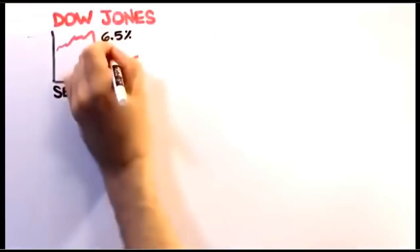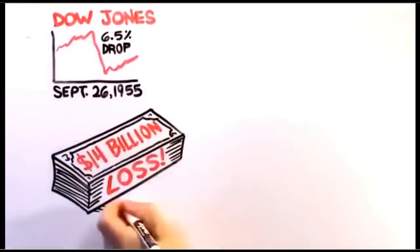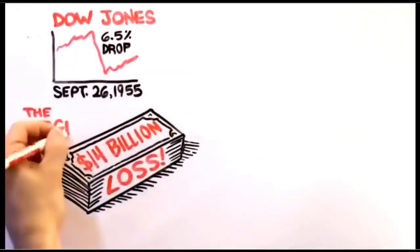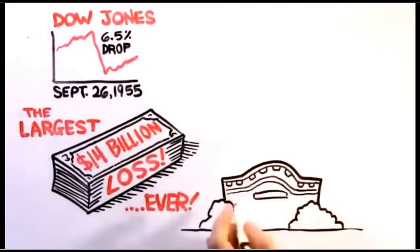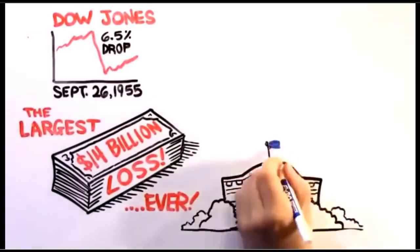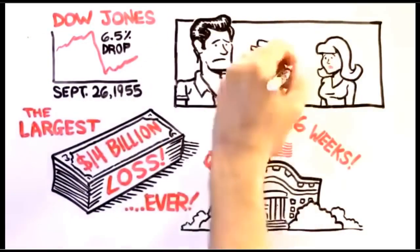On Monday, September 26, the Dow Jones plunged 6.5%. The total paper loss of the day was $14 billion, the largest ever, including that of the Great Depression. President Eisenhower would not walk again until October 25, and would not return to the White House until November 11, nearly six weeks later. By this time, the fear of heart attacks was on everyone's mind.